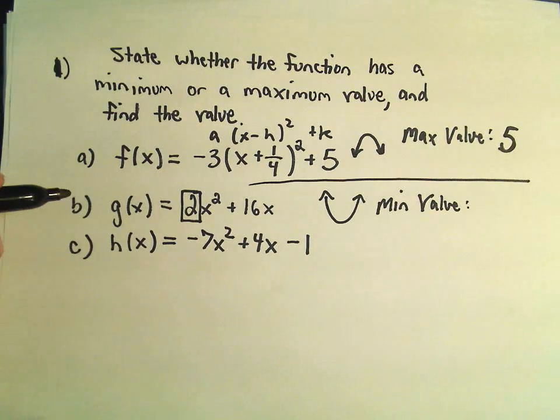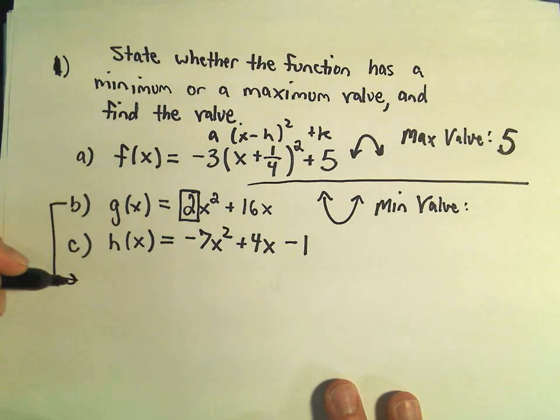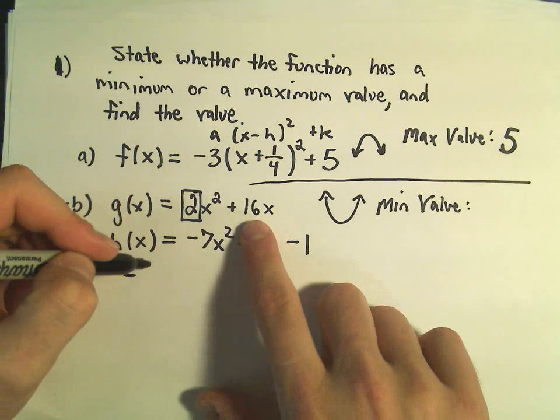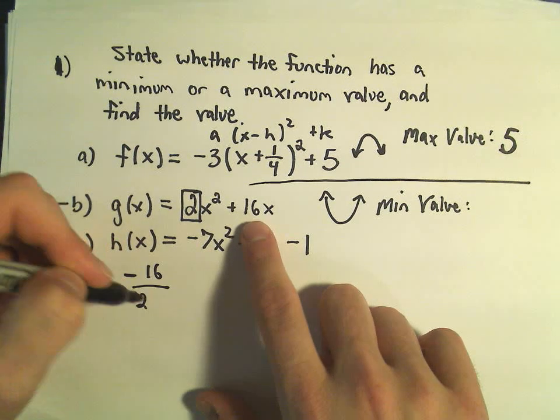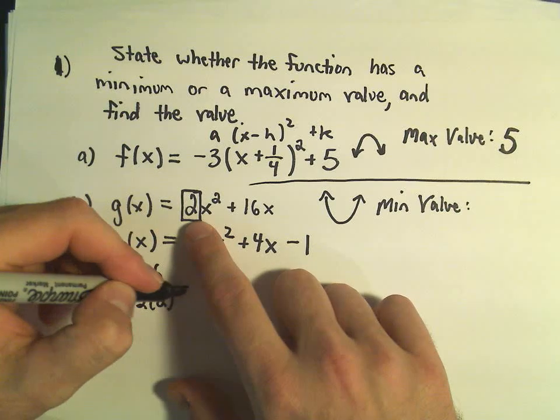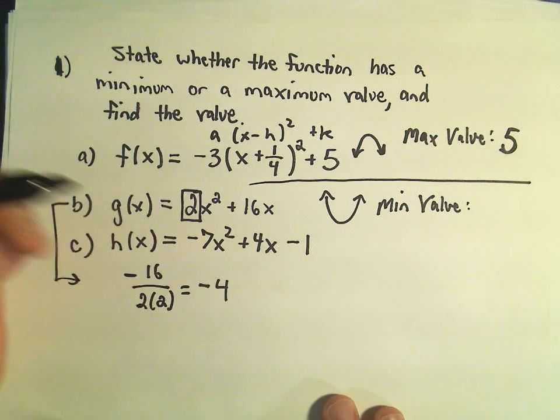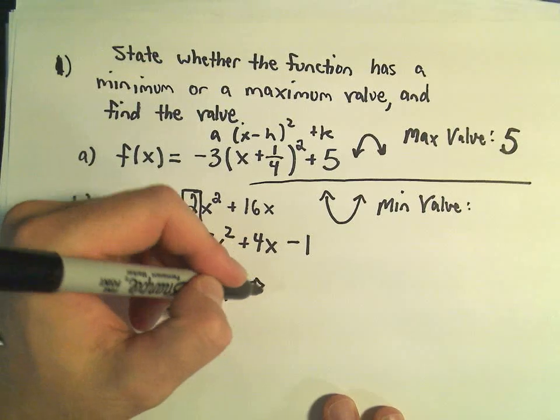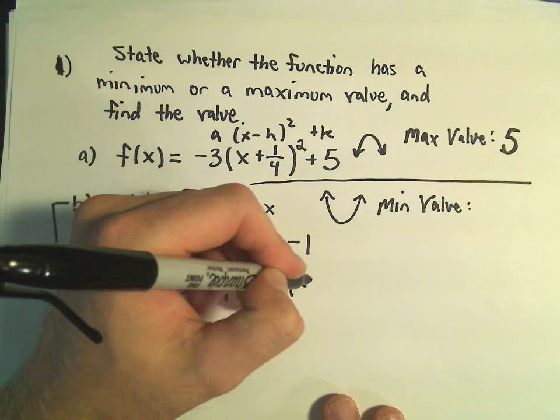Okay, well to find it, I'm just going to use my formula negative b over 2a. So I'll take negative b, which will be 16, over 2 times a, which is 2. So that's negative 16 over 4, which will give us negative 4. And if we plug that in to get the y value,